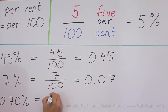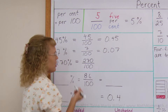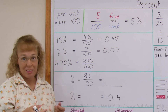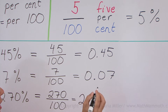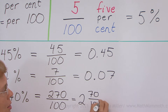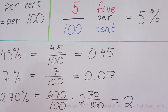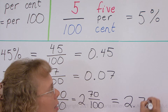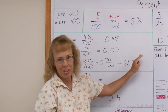270%: the same thing, right? 270, then per, then cent — over 100. Now this fraction could be written as a mixed number: it is 2 and 70 hundredths. And as a decimal, we get 2 and then 70 hundredths — you could also omit the last zero and get 2.7.